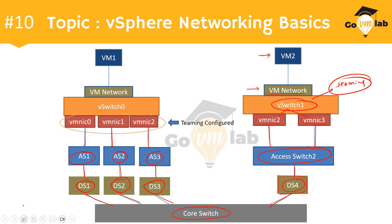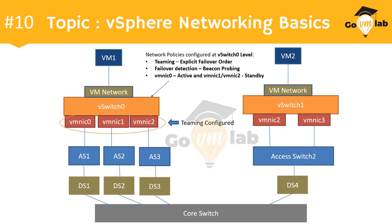Now let's look at the network policies configured by the VMware administrator. The administrator has configured a teaming policy — which is expected since the virtual switch has more than one physical uplink. The specific policy configured is explicit failover order. In explicit failover order, you define active and standby adapters: VMNIC0 is the active adapter, while VMNIC1 and VMNIC2 are standby adapters. The failure detection mechanism configured is beacon probing, to protect against both direct link failures and upstream switch failures.